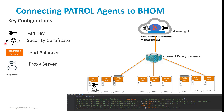The second important configuration is the certificate. Certificates allow another layer of secure communication between PATROL agents and BHOM. In order to enable agents to communicate with BHOM, the BHOM CSI certificate will have to be updated on the target PATROL agents.